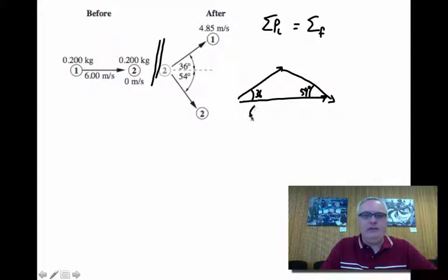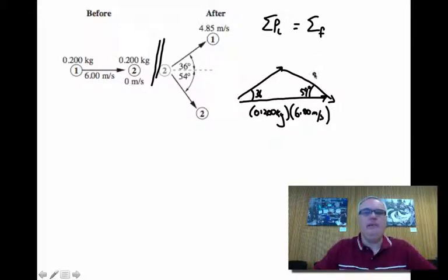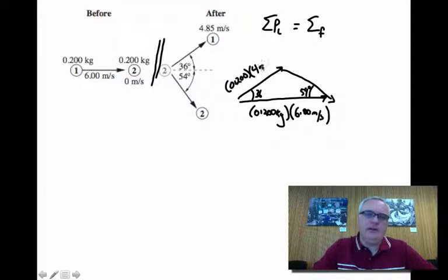And the initial momentum was 0.200 kilograms at 6 meters per second. And over here, there's still 0.20 kilogram masses. This vector is traveling at 4.85 meters per second. And then this vector, we know the mass, but we don't know the velocity.